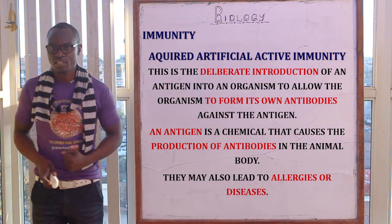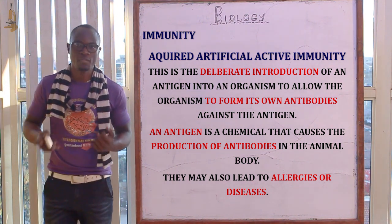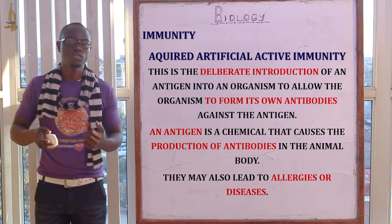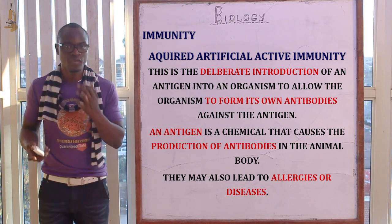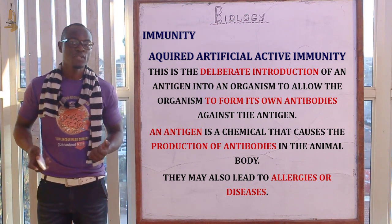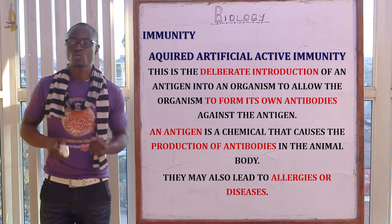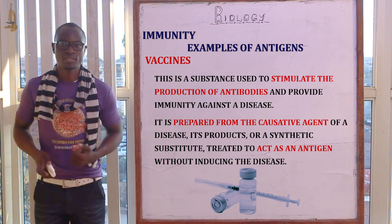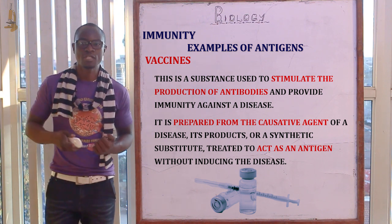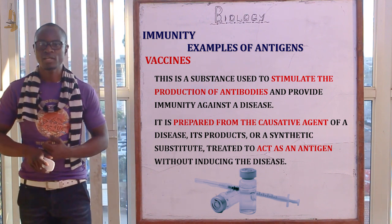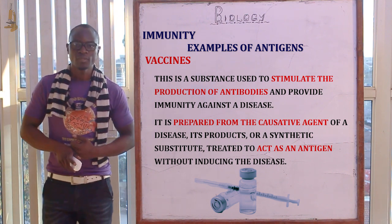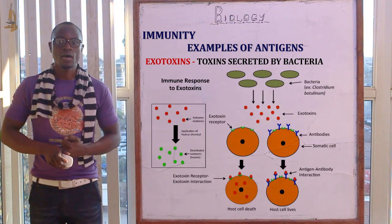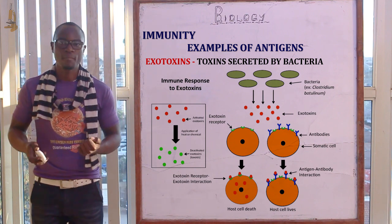An antigen is a chemical that causes the production of antibodies in the animal body and may also lead to different allergies or diseases. There are many different types of antigens. The first type is the vaccine, which is a suspension of living attenuated or weakened microbial cells introduced into the body. Another type is exotoxins, which are toxins mainly secreted by bacteria.